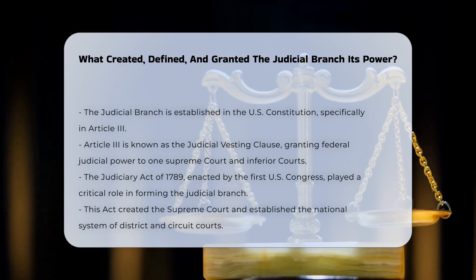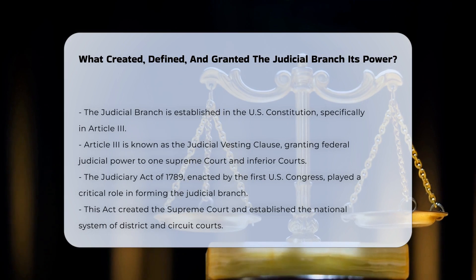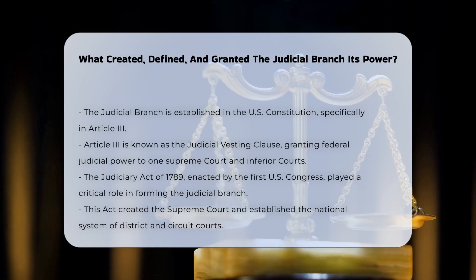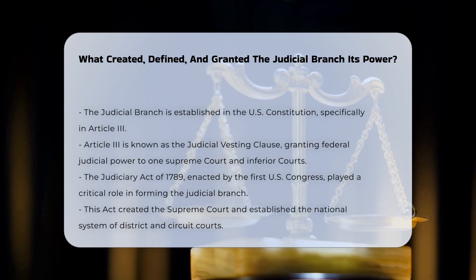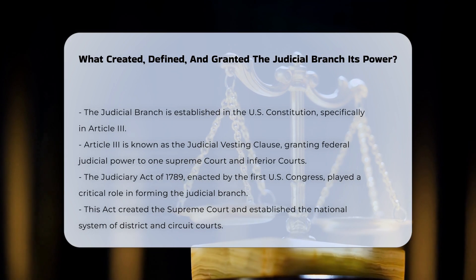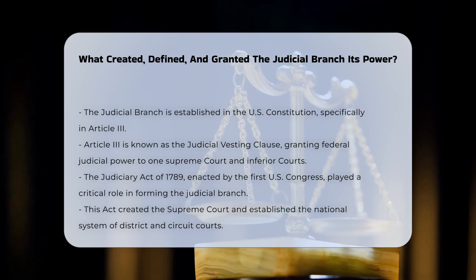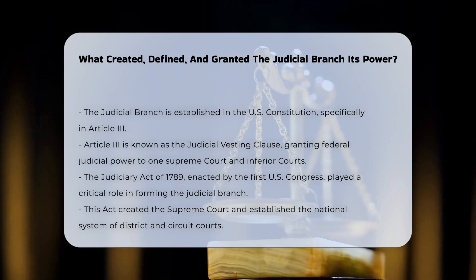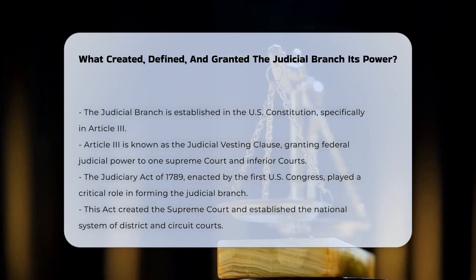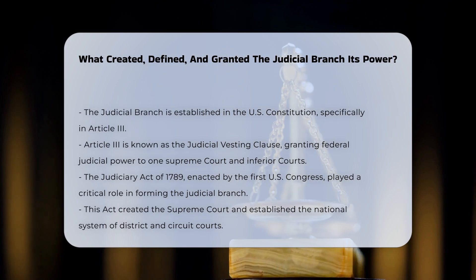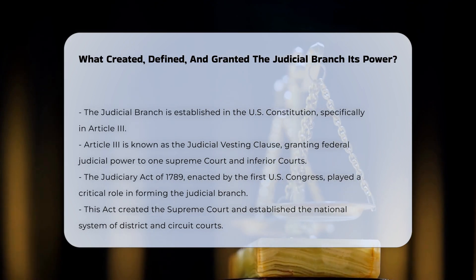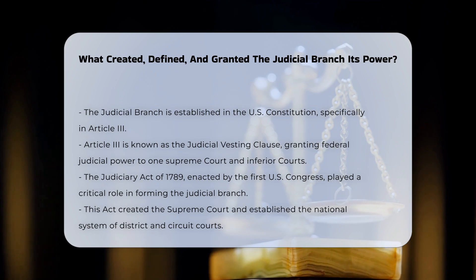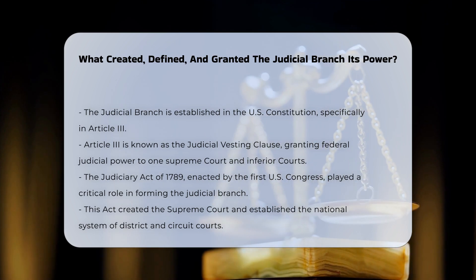The foundation of the judicial branch of the United States is laid out in the Constitution, specifically in Article 3. This article is known as the Judicial Vesting Clause and confers the federal judicial power on one Supreme Court and such inferior courts as the Congress may from time to time ordain and establish.